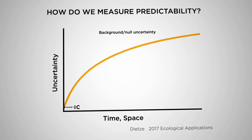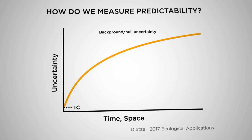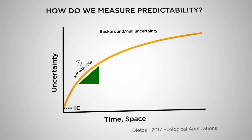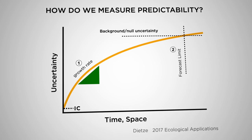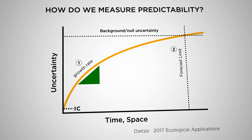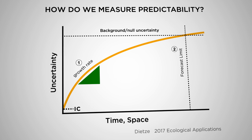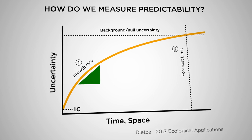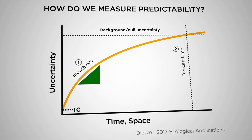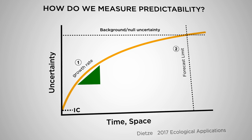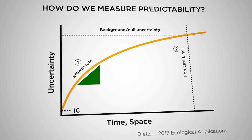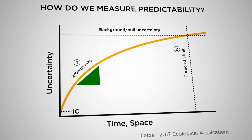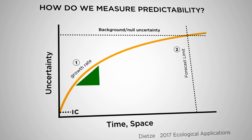One measure of predictability would be the rate at which that uncertainty is growing, and another might be when that uncertainty reaches a point where it's essentially indistinguishable from our background understanding. It might converge to the average understanding of a system, and sometimes we're not doing any better than random — just resampling the data we already have — converging to the range of natural variability in the system.